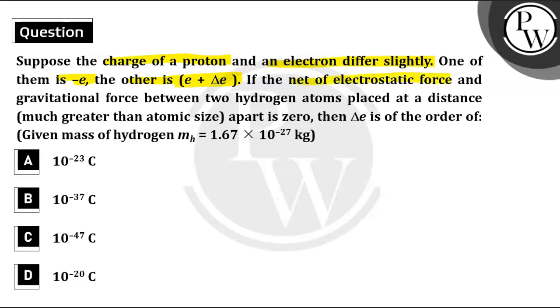If the net of electrostatic force and gravitational force between two hydrogen atoms placed at a distance much greater than atomic size apart is zero, then delta E is of the order of, given mass of hydrogen MH equals 1.67 into 10 power minus 27 kg.